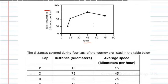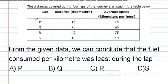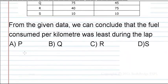In lap P, the motorcycle travelled with an average speed of 15 kilometers per hour. At 15 kilometers per hour, the fuel consumption from the graph is nearly 60 kilometers per liter. For lap P, he has travelled 15 kilometers total.